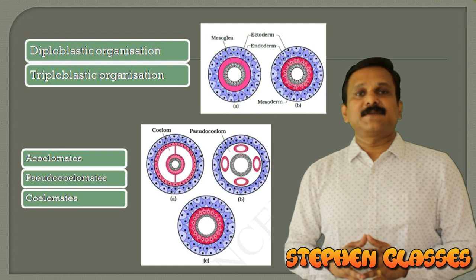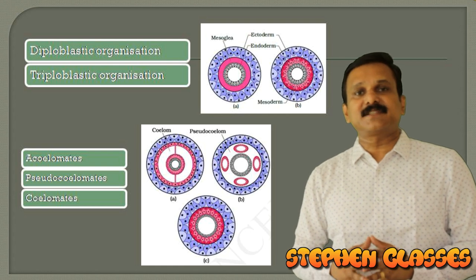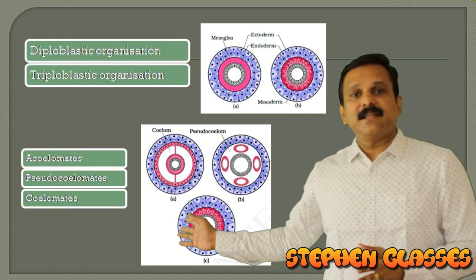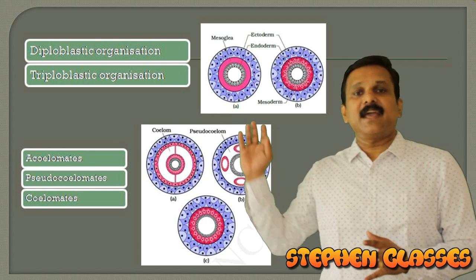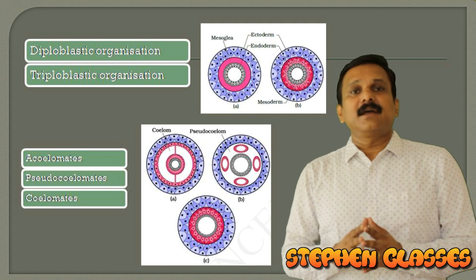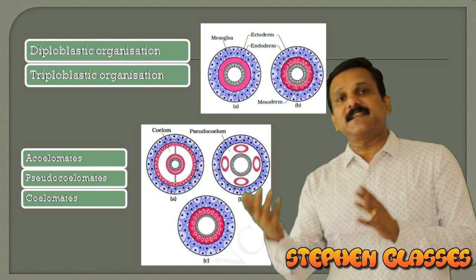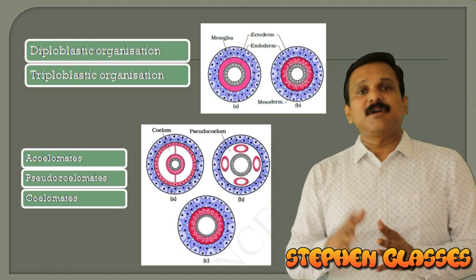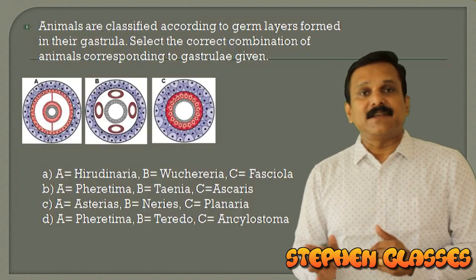Pseudocoelomates have a false coelom where the mesoderm is scattered to form pouches, creating a false body cavity — seen in the Aschelminthes group. Coelomates have a true coelom, as in picture A, from Annelida to Chordata. You should keep in mind the different phyla and their coelom character, and the examples belonging to each group, to answer these questions.